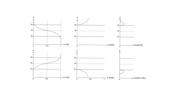For the conduction band, we multiply P(E) by N_CB(E), which is the density of states in the conduction band. This small tail, multiplied by the density of states, gives us the distribution of electrons in the conduction band. To find the total electrons in the material, we integrate over the entire conduction band, which gives us this area.